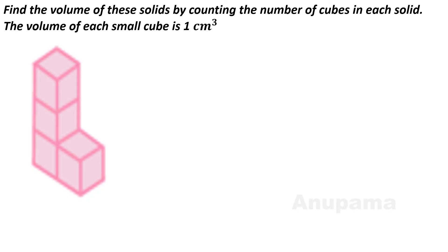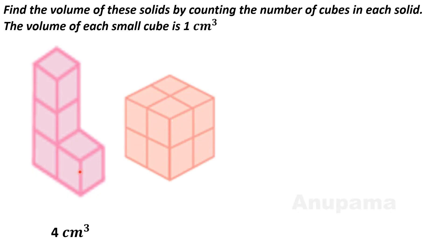There are four cubes: one, two, three, and four. So the volume of this shape is four centimeter cube. Let us take another shape and count its cubes: one, two, three, four. In a similar way, four cubes are on the other side, making a total of eight centimeter cube as the volume of this shape.